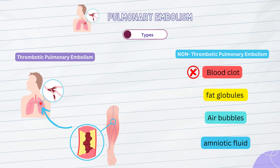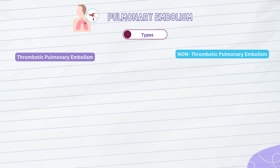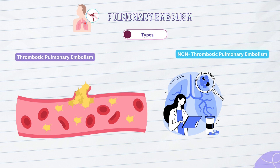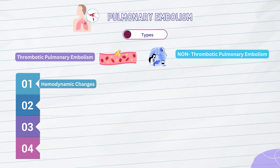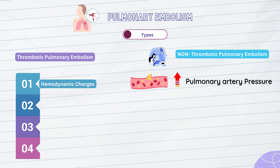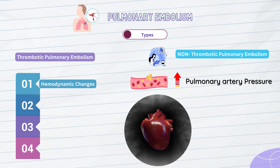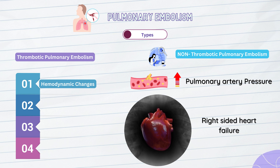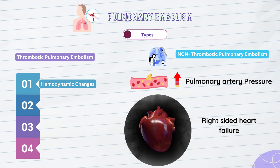Regardless of the type of pulmonary embolism, the underlying mechanism involves the obstruction of pulmonary arteries by an embolus, resulting in impaired blood flow to the lungs. This obstruction triggers a series of events that can have serious consequences. First, hemodynamic changes: the presence of a pulmonary embolus causes an increase in pulmonary artery pressure. As a result, the right ventricle of the heart must work harder to pump blood against this increased resistance, leading to right-sided heart strain or even right-sided heart failure.